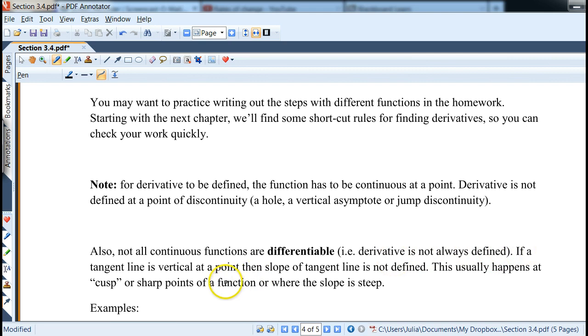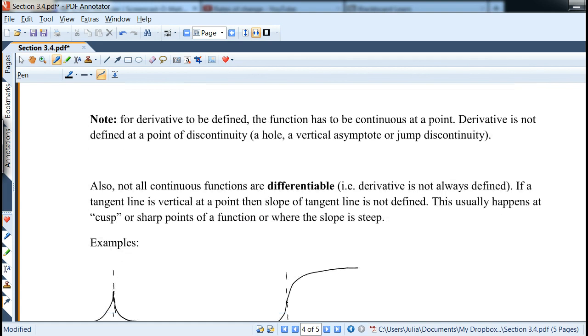Basically means the function may be continuous, but derivative is not always defined. If a tangent line is vertical at a point, then slope of tangent line is not defined. That's sort of obvious going back to a slope of a vertical line. So this usually happens at the so-called cusp points or sharp points. They look really sharp, where the slope gets really steep.